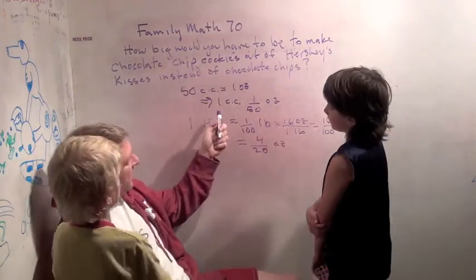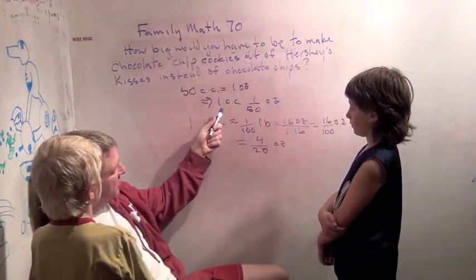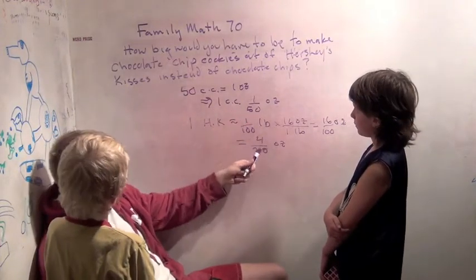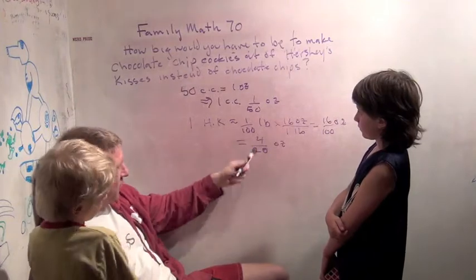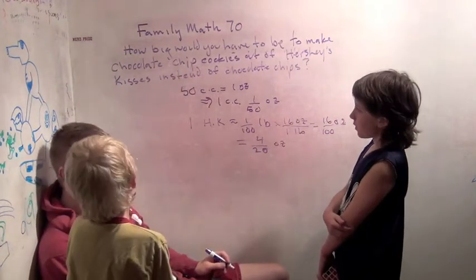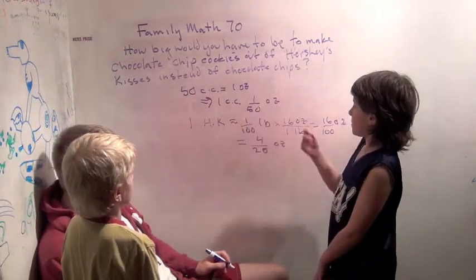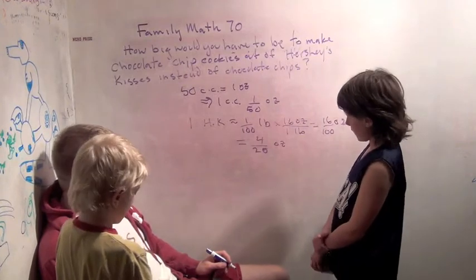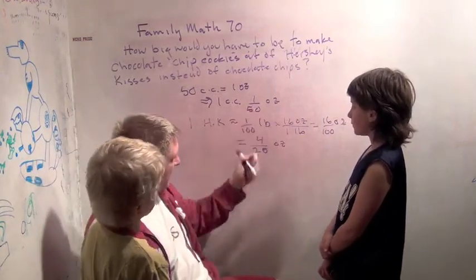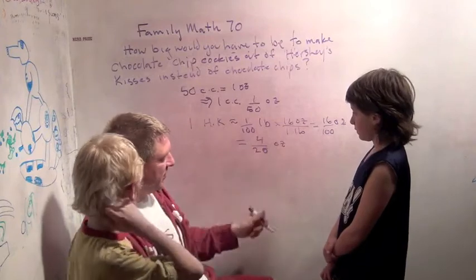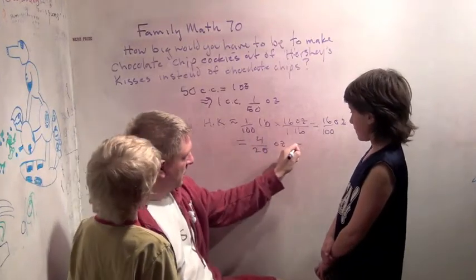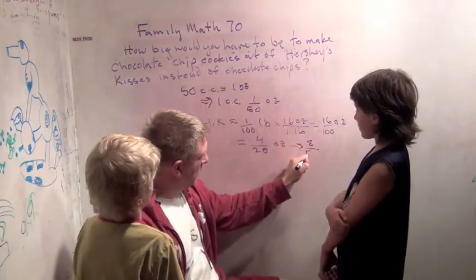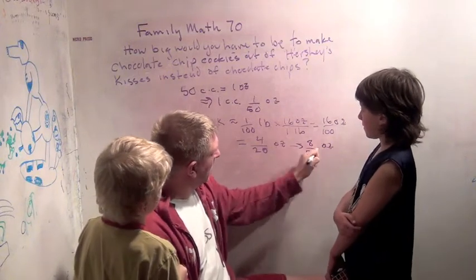Now this is interesting. We need to figure out how many chocolate chips, which weigh one fiftieth of an ounce, do we need to make four twenty-fifths of an ounce. So what's the easiest way to think that through? Two chocolate chips is a twenty-fifth or two fiftieths. Two chocolate chips is two fiftieths. How many fiftieths is four twenty-fifths? It's eight fiftieths.